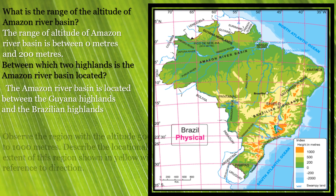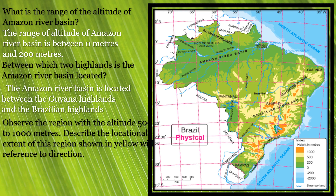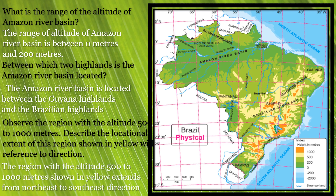Next question: observe the region with the altitude of 500 to 1000 meters and describe the location and extent of this region shown in yellow with reference to direction. The yellow region with height between 500 to 1000 meters is more towards the eastern side — the northeastern and southeastern sides. The answer is: the region with the altitude of 500 to 1000 meters shown in yellow extends from the northeast to the southeast direction.